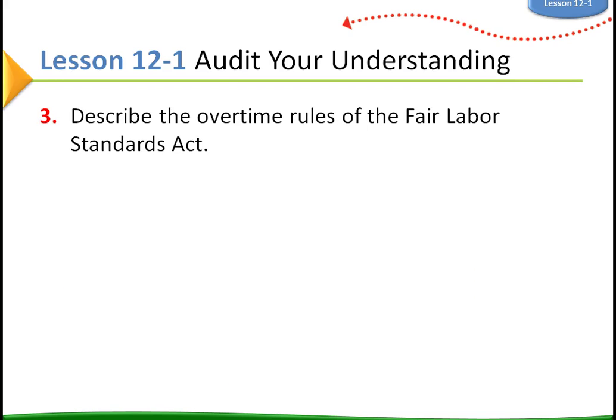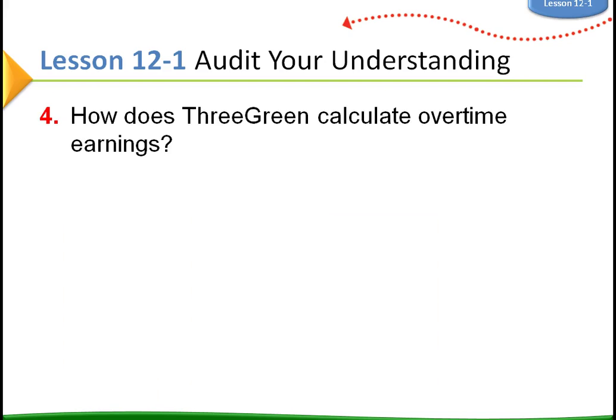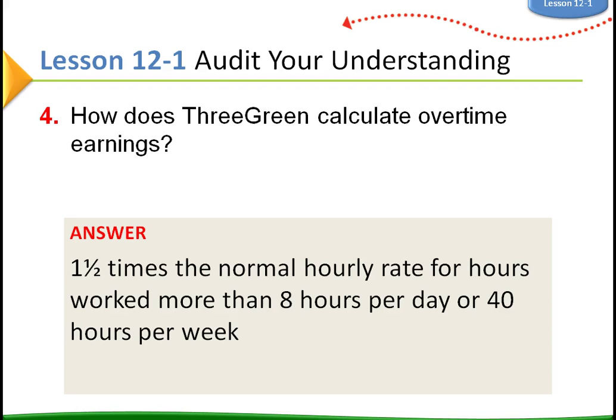Describe the overtime rules for the Fair Labor Standards Act. The Fair Labor Standards Act — often referred to as the federal wage and hour law — sets the minimum wage and rules for payment of overtime. It requires most businesses involved in interstate commerce to pay employees at least one and a half times their normal hourly rate for hours worked in excess of forty hours per week. At Three Green, they comply with the act but go further — paying overtime when employees work more than eight hours in a day. So for Three Green, overtime applies after eight hours in a day or forty hours in a week.